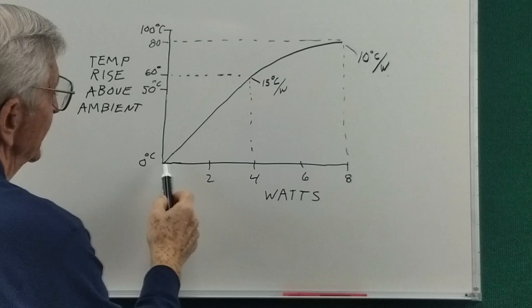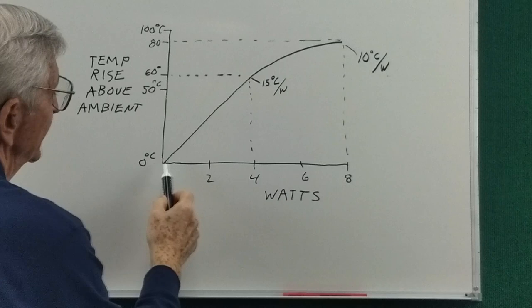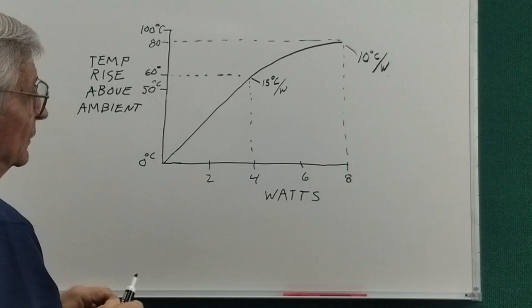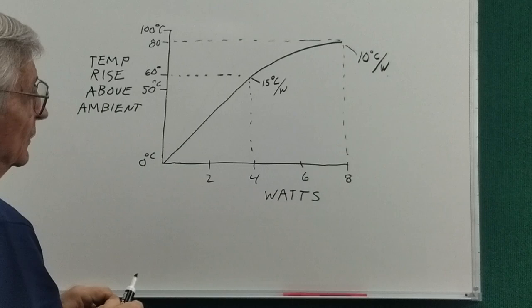So typically we'll have a curve presented that is something like this. I've exaggerated this curvature. But at 4 watts and 60 degrees, that's 15 degrees C per watt. As we get the heat sink to a higher and higher temperature, it radiates more and more. So it's not only convection, but radiation takes effect. And we'll get a lower degrees C per watt.